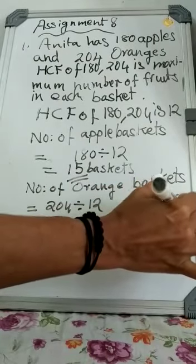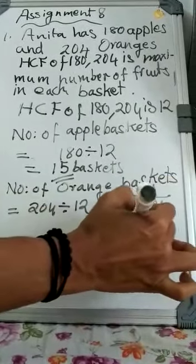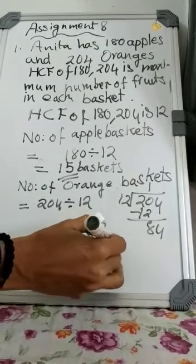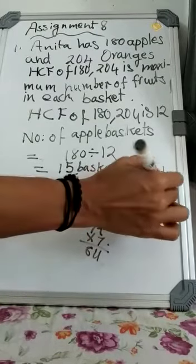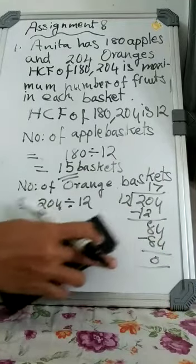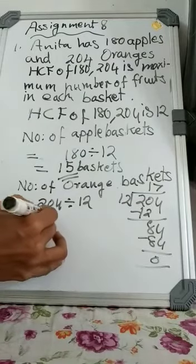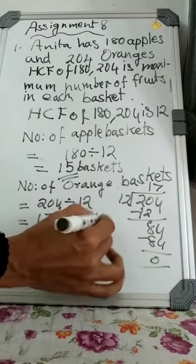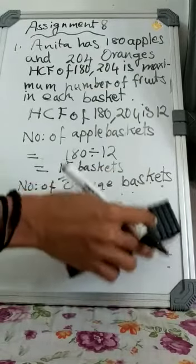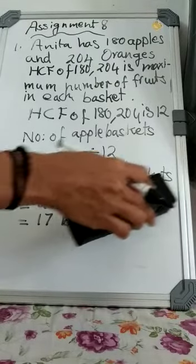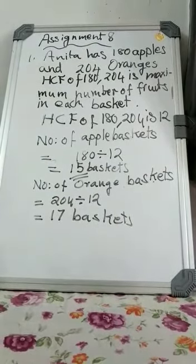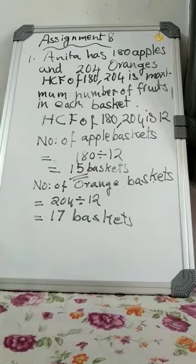204 divided by 12: 12 goes into 20 once with remainder 8; bring down 4 to get 84; 12 into 7 is 84, so you write 7 here and get remainder 0. So how much did you get? 17. So there will be 17 baskets of oranges and 15 baskets of apples. You divide into baskets of 12, and 12 is the HCF of 180 and 204, which is the maximum number of fruits you can put in each basket of equal number.